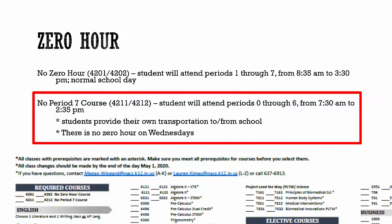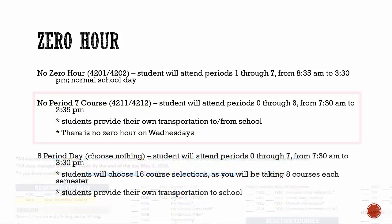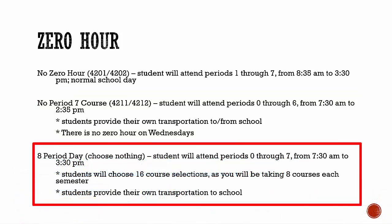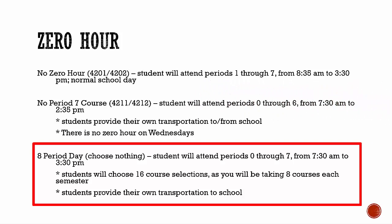If you would like to take a zero-hour course, you have two options. The first option is to attend periods zero through six and leave after period six. With this option, you still attend school for seven periods a day, but you start your school day a period early and then can leave school a period early. If you would like to attend zero-hour and leave after sixth period, you will select no period seven course. Keep in mind that if you select no period seven course, you will need to provide your own transportation as you will start and end your school day early.